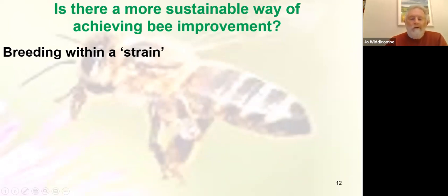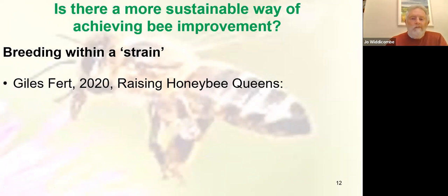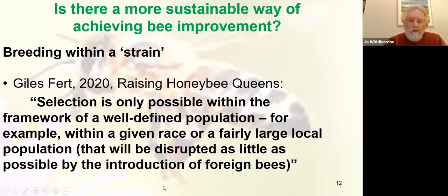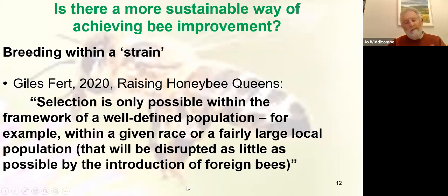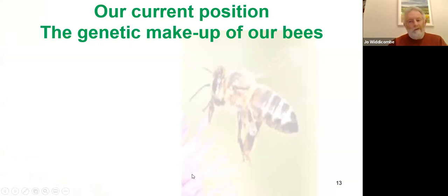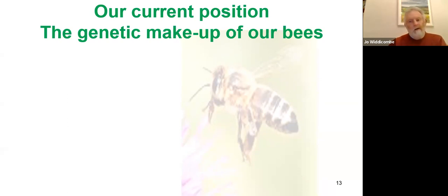Breeding within a strain or within a subspecies — here's a quote: 'Selection is only possible within the framework of a well-defined population, for example within a given race or a fairly large local population, that will be disrupted as little as possible by the introduction of foreign bees.' That's the clue if we're going to make any progress in bee improvement — we've got to start with what we've got locally. That's not a short-term fix, unlike buying in a top-rated bred bee that gives you an answer straight away, albeit one that is not sustainable.